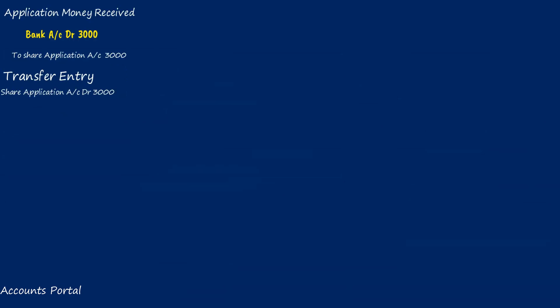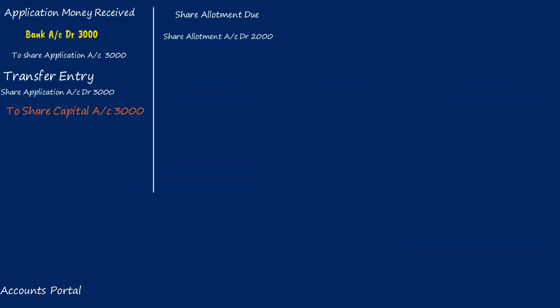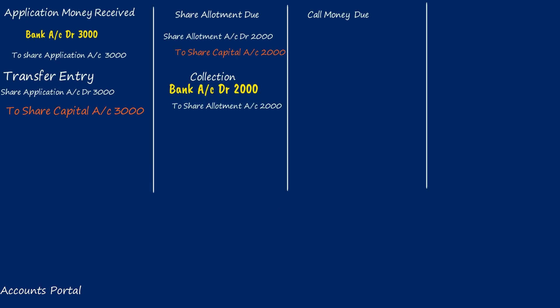Share allotment money due entry: Share Allotment account Dr. — number of shares allotted × allotment money per share = 1,000 × 2 = rupees 2,000. Share Allotment account Dr. 2,000 to Share Capital account 2,000. Share allotment money received: Bank account Dr. 2,000 to Share Allotment account 2,000.